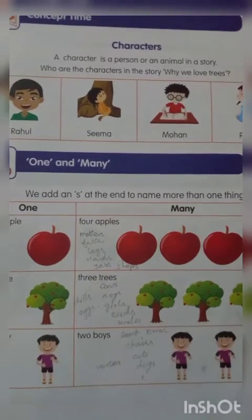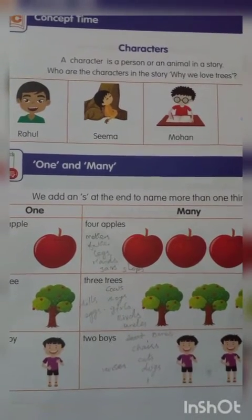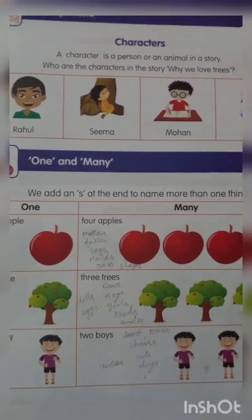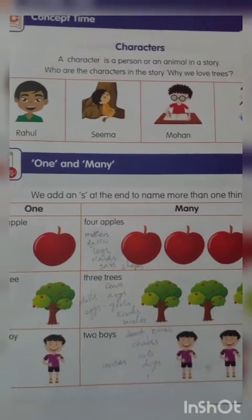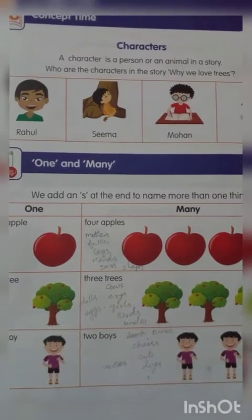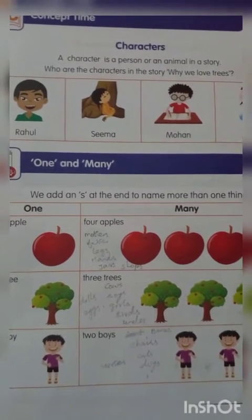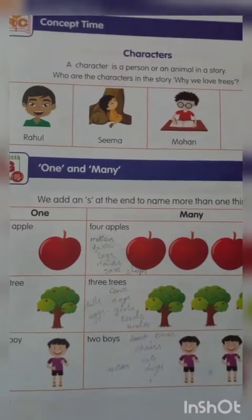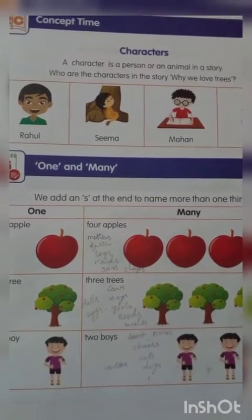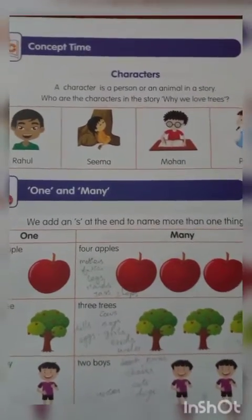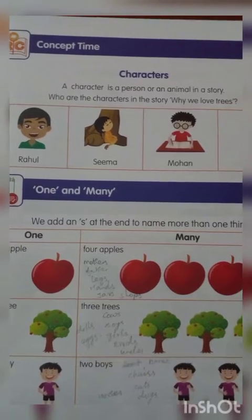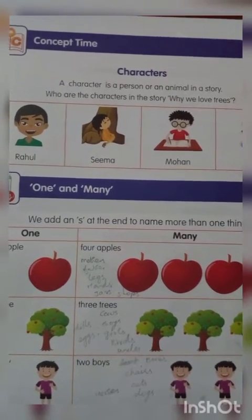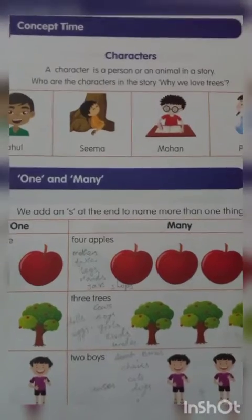Then we learned 'one and many,' which means singular and plural. To make a singular noun into plural, you should add S at the end of that noun. The suffixes we can add include S, ES, and VES.